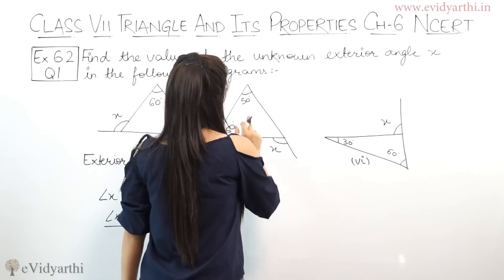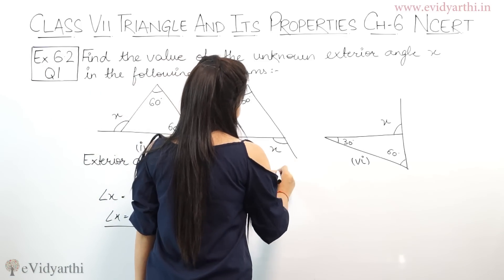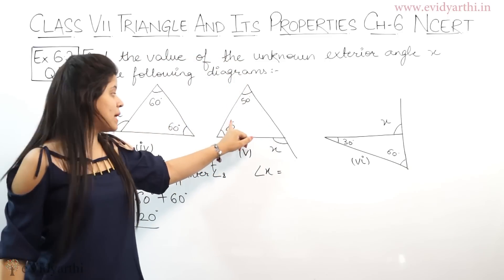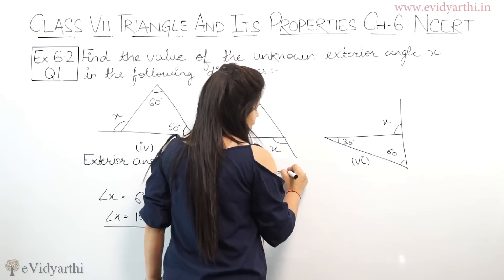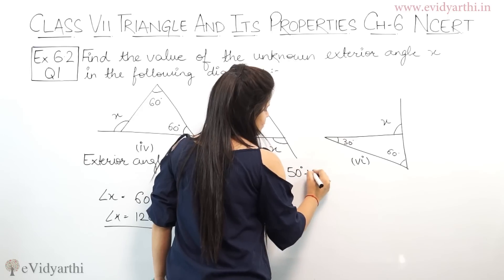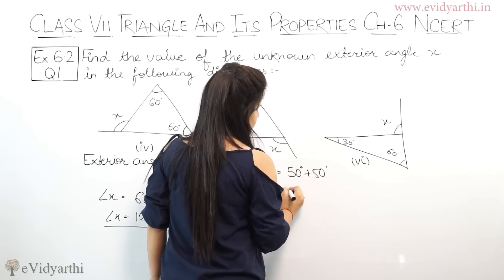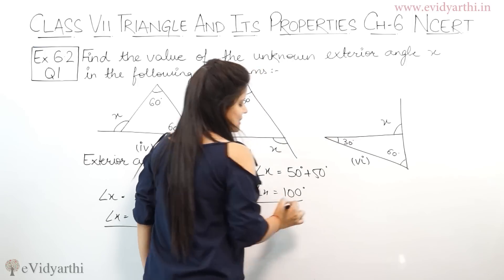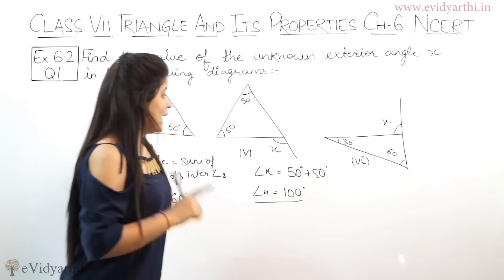Fifth part. Again, angle X will find you. What is angle X? This angle plus this angle, that is 50 degree plus 50 degree. 50 plus 50 is 100. Angle X is 100 degree.